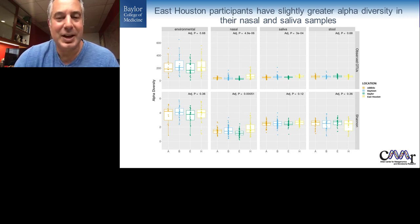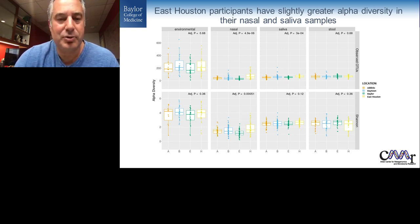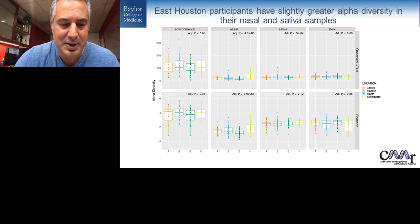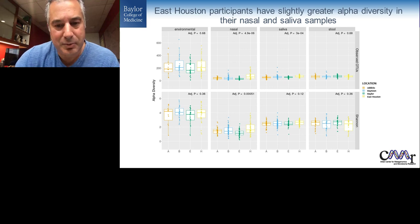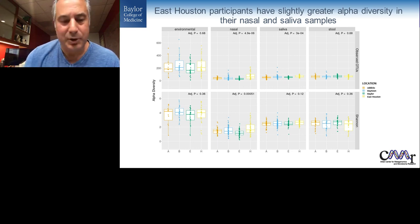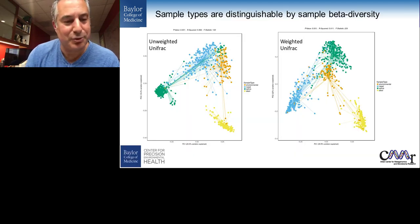There seem to be some differences in alpha diversity — different numbers of organisms and their distribution — depending on where you were located. Locations are indicated in the key: A is Attics, B is Baytown, E is Baylor College of Medicine, and H is East Houston. What we did see is that samples from East Houston seem to have slightly higher diversity in nasal and saliva compared to the other communities. We don't yet know what that means — this is still the descriptive stage of the study.